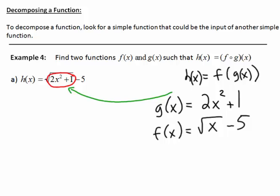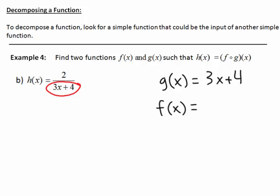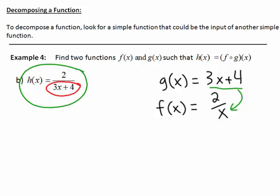That's not the only solution — many solutions are possible. For another example: g of x could be 3x plus 4, and if that's the case, f of x must have been 2 over x. Taking g and putting it in for x gives us h of x. There is our decomposition of a composite function.